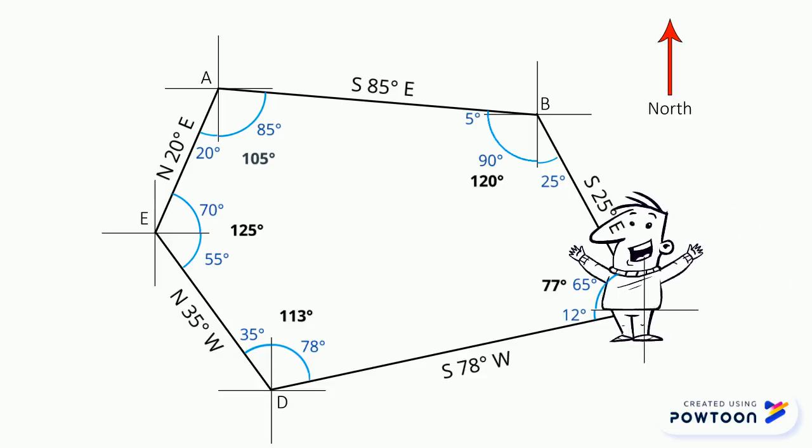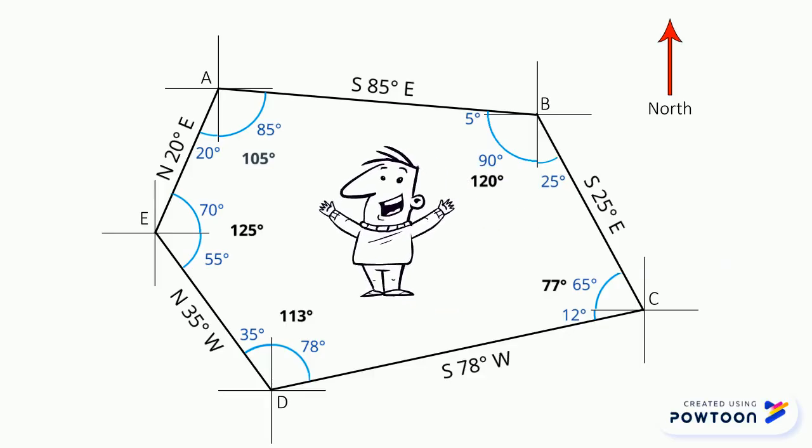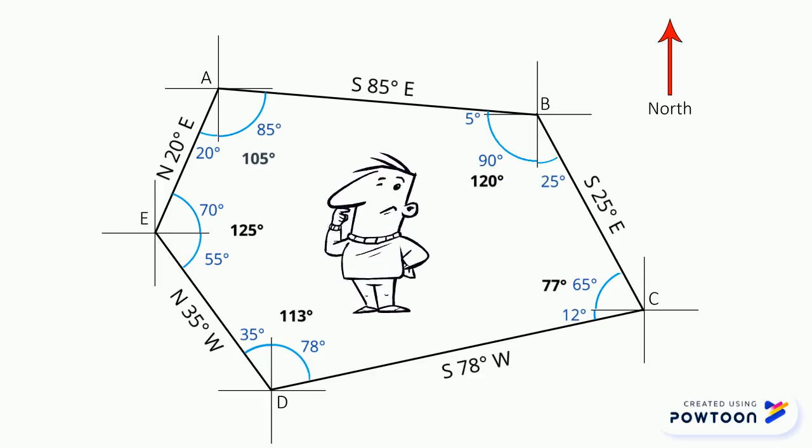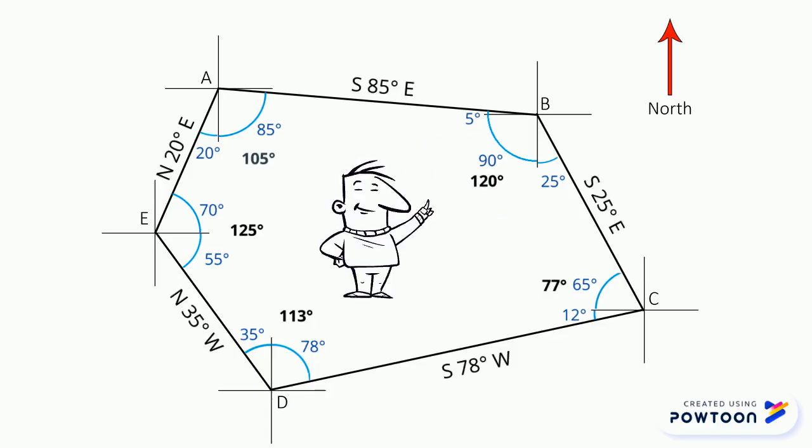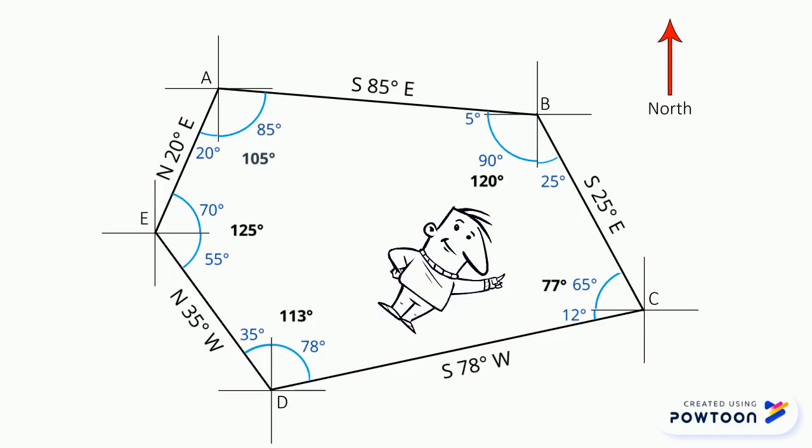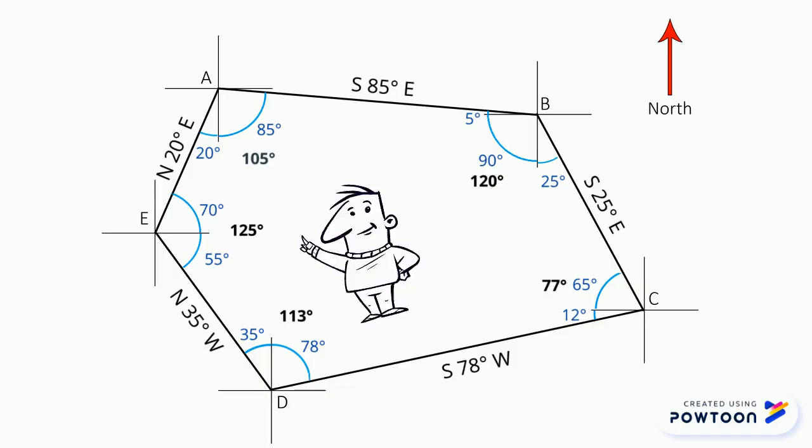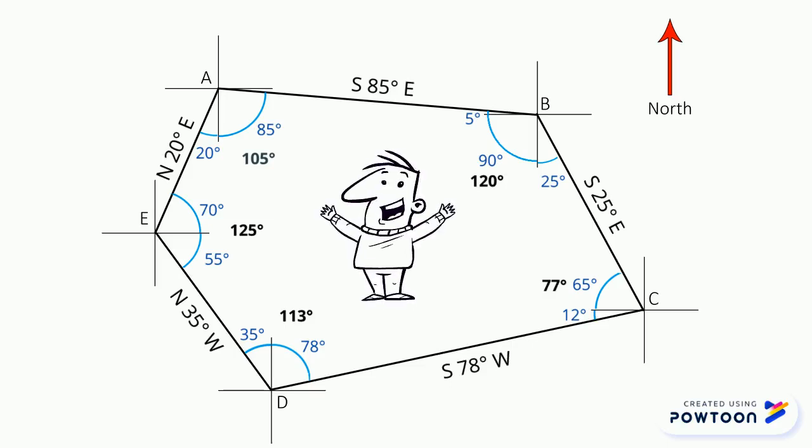So now we've found all of the interior angles of this 5-sided irregular polygon. But to check if it's correct, we must add all of the interior angles. 105 plus 120 plus 77 plus 113 plus 125 is 540, which means it's correct.